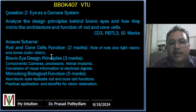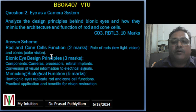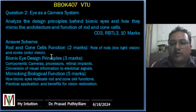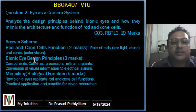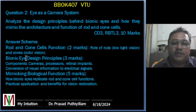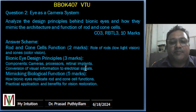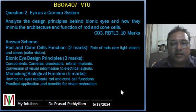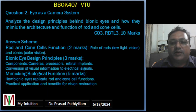The question is: analyze the design principles behind the bionic eye and how they mimic the architecture and function of rod and cone cells. This is connected to Course Outcome 3, Revised Bloom's Taxonomy Level 3, and carries 10 marks. The answer scheme requires mention of rod and cone cell function, bionic eye design principles, and how it mimics biological function.